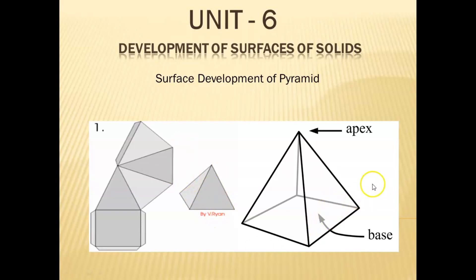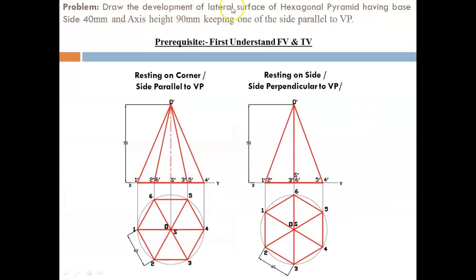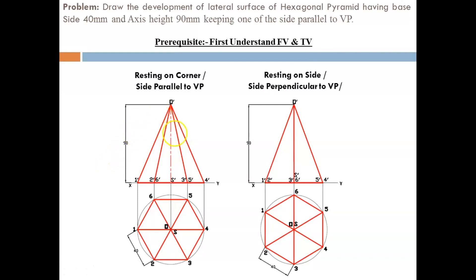So let's start with the problem. Draw the development of the lateral surface of a hexagonal pyramid having a base side equal to 40 mm and axis 90 mm, keeping one side parallel to the VP. We have already understood the concept of keeping a side parallel to the VP or resting on a corner or base side in the square prism problem.